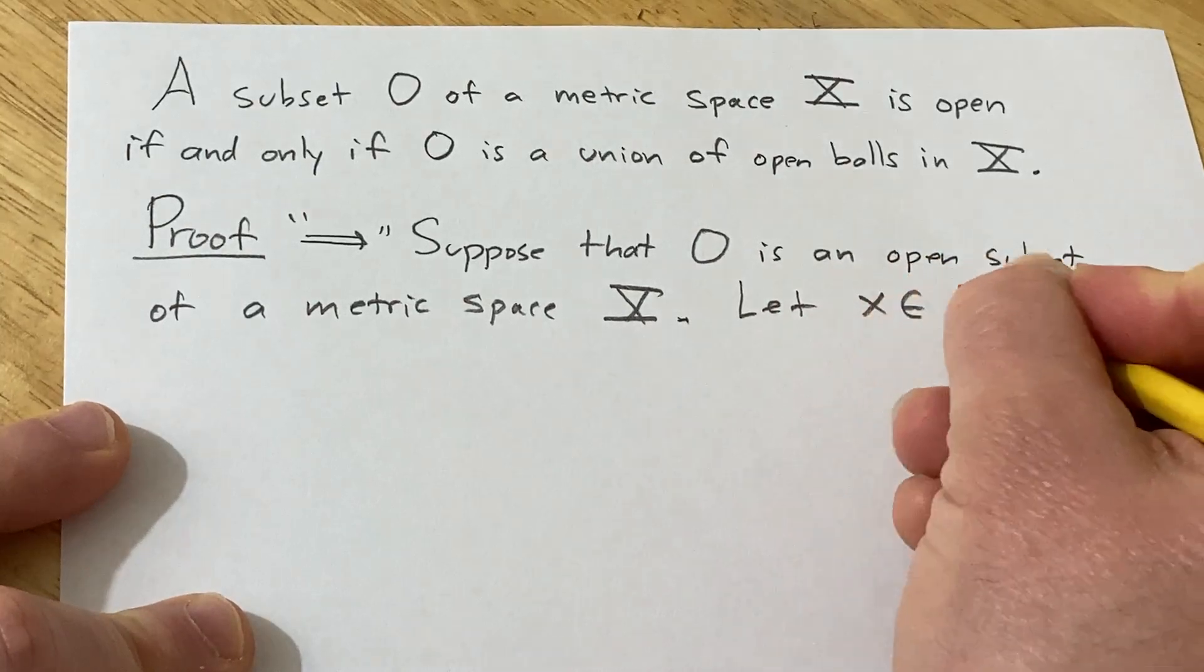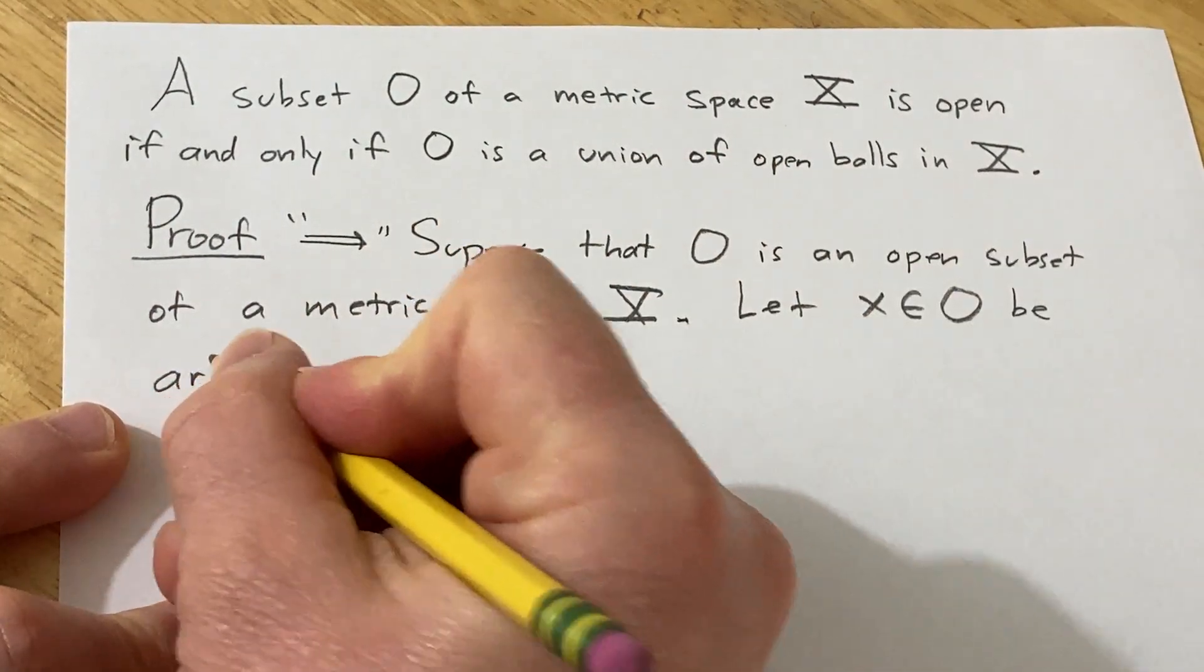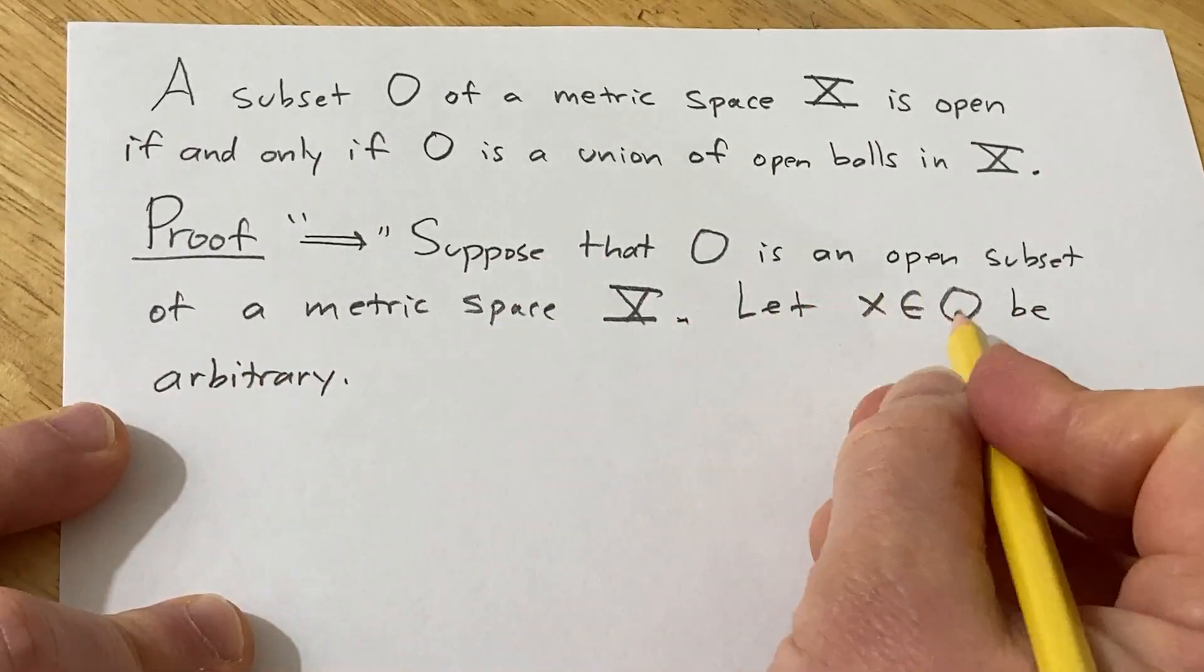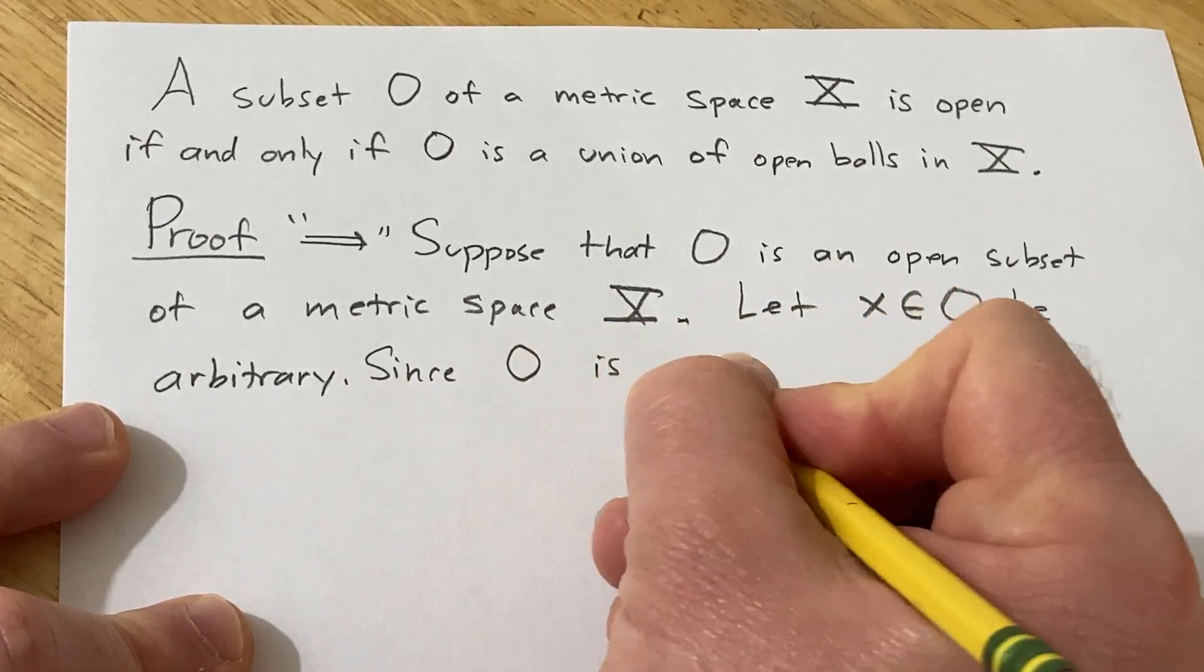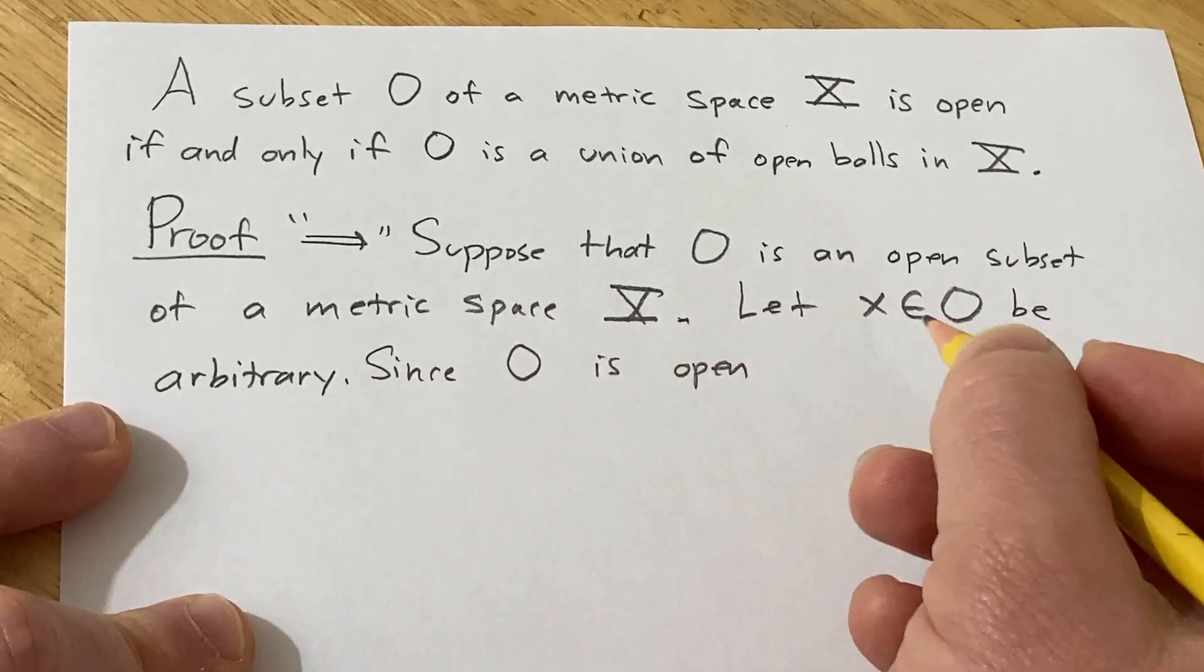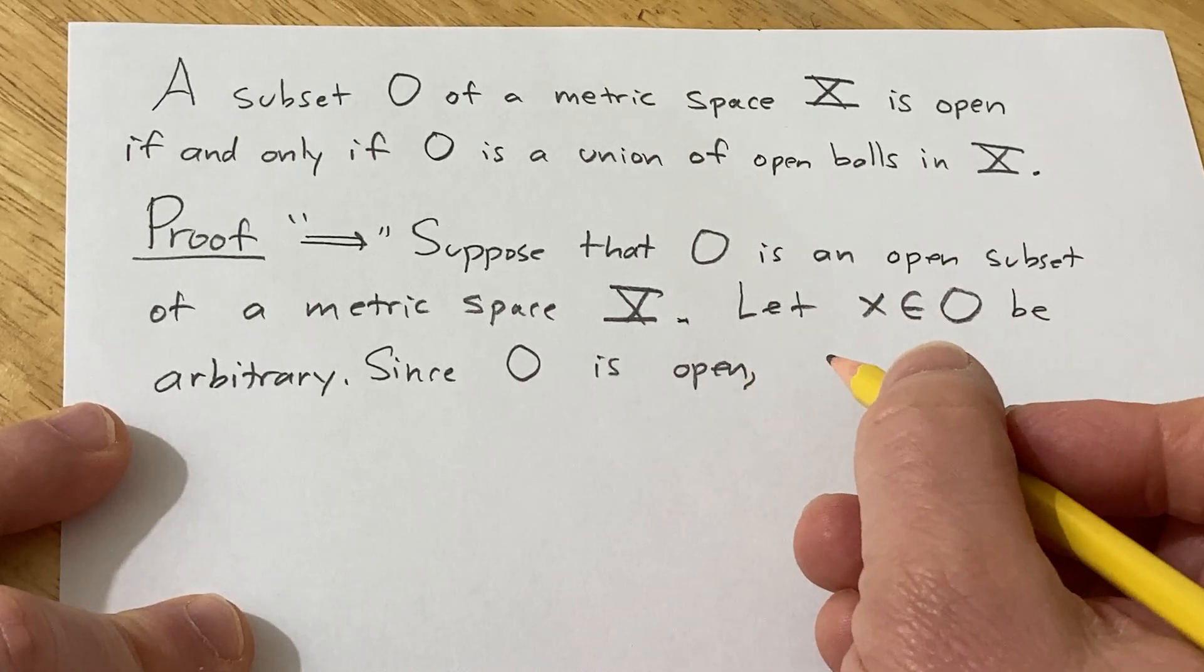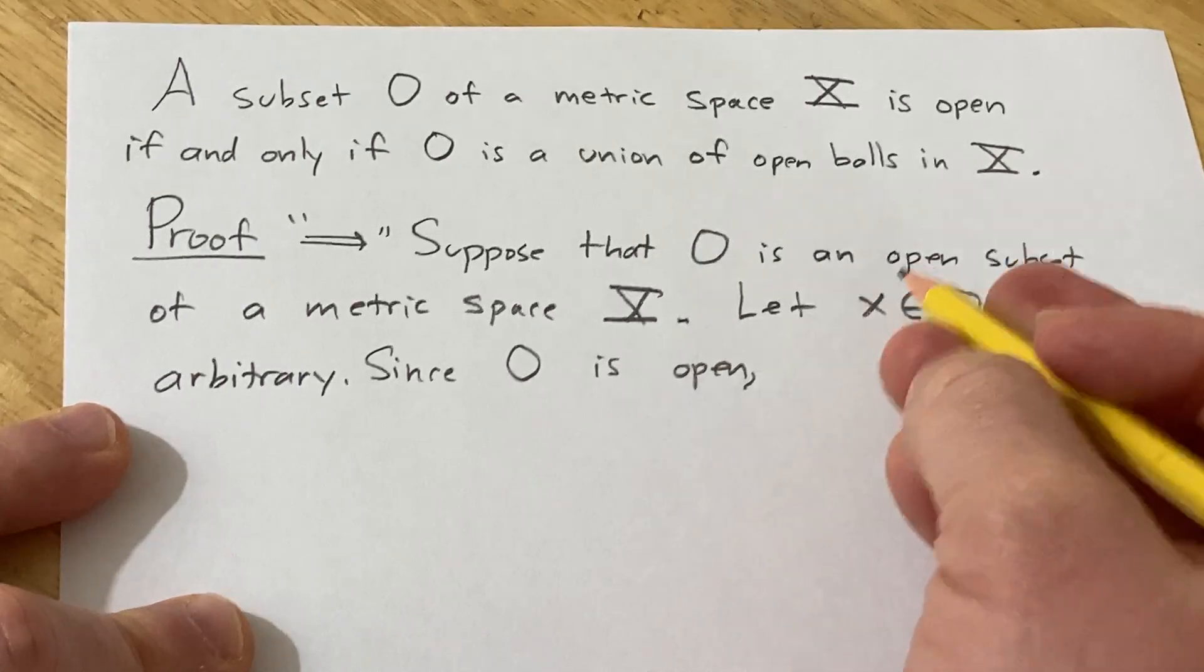So let x in O be arbitrary. Now since O is open, well it means x is an interior point. That means that there is some open ball centered at x of radius R that's contained entirely in O.